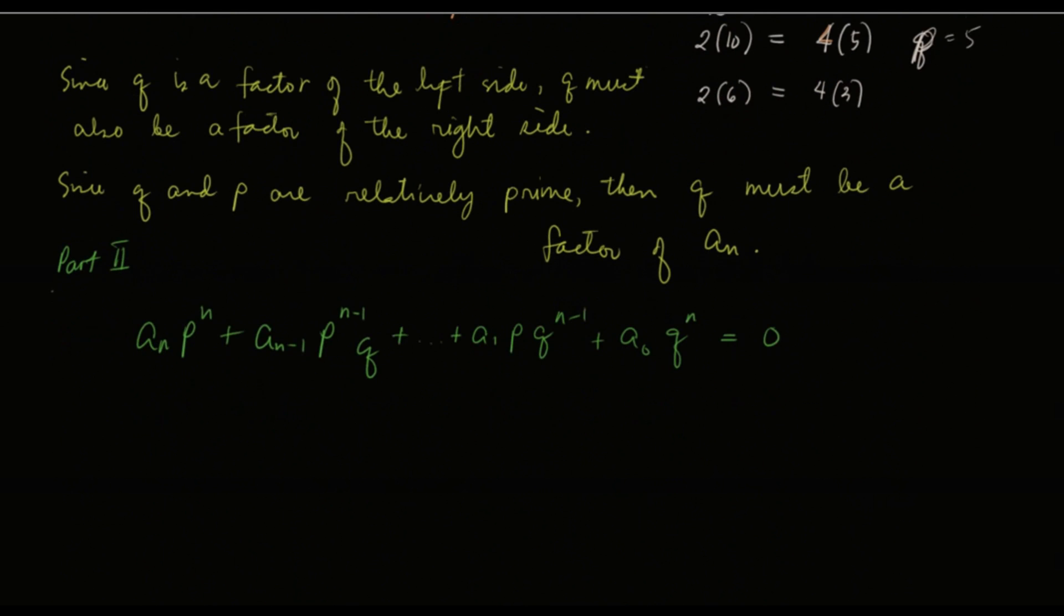What we're going to do is, by addition property of equality, I'll subtract a sub 0 q to the n over here. So it will become a sub n p raised to n plus a sub n minus 1 p raised to n minus 1 q, plus a sub 1 p q raised to n minus 1, equals negative a sub 0 q raised to n.